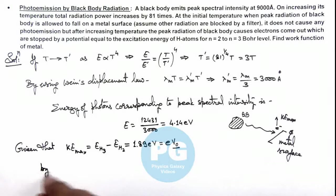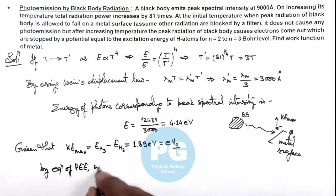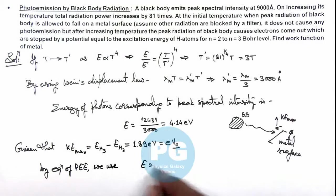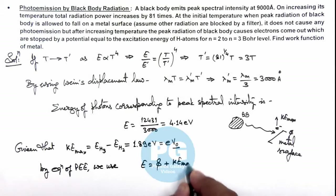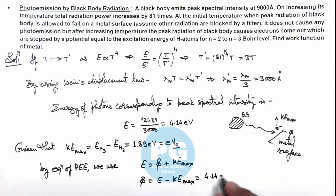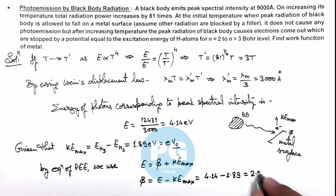We use the supplied energy should be equal to work function plus KE max. And here we can write the value of phi is equal to E minus KE max, which on substituting the numerical values is 4.14 minus 1.89. On simplifying, this is giving us the value of phi as 2.25 electron volts. That is the result of this problem.